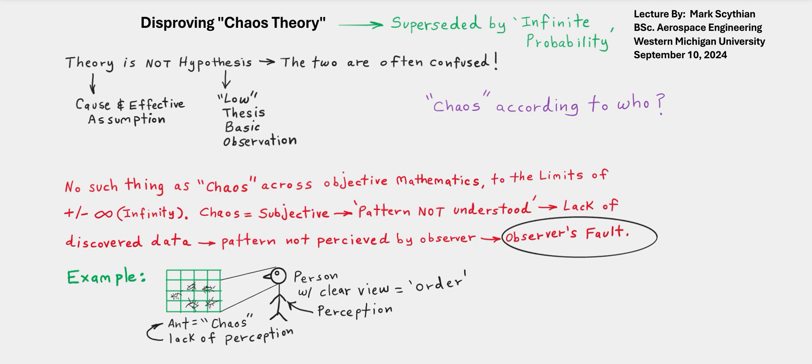To the ant or a similar observer with limited view and scope would perceive the order as chaos. Now if we took the person standing over the kitchen tile, the person would see clear square XY axis order on two dimensions. Why is it the two observers have different recognition or perception?